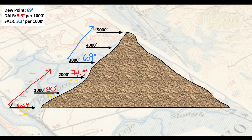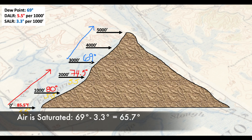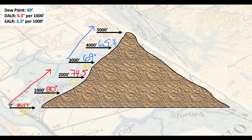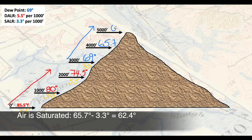Now I subtract 3.3 instead: 69.0 minus 3.3 equals 65.7°F at 4,000 feet. Then going to the peak at 5,000 feet, I subtract another 3.3 from 65.7, which brings me to 62.4°F at the summit.